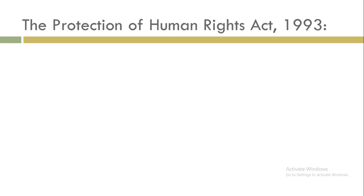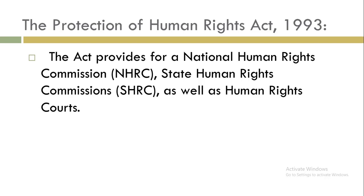The Act provides for a National Human Rights Commission, State Human Rights Commission, as well as a Human Rights Code. The Protection of Human Rights Act 1993 was enacted in India for human rights protection. Since all the human rights provisions were in place, steps needed to be taken for enforcement — hence these three commissions and a Human Rights Code were created.